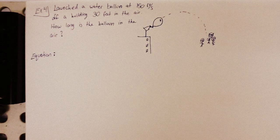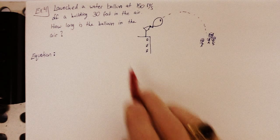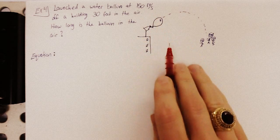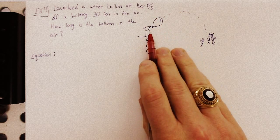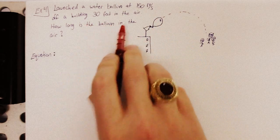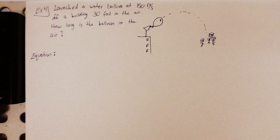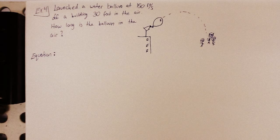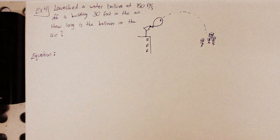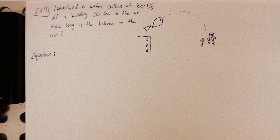We're going to launch a water balloon off a building. It's going to travel 150 feet per second. We've got a high-powered catapult up here. And the building's 30 feet in the air. The question is, how long is the balloon in the air? Okay. Well, the equation for that, I'm going to give it to you. I wouldn't expect you to come up with that. That's a physics problem.